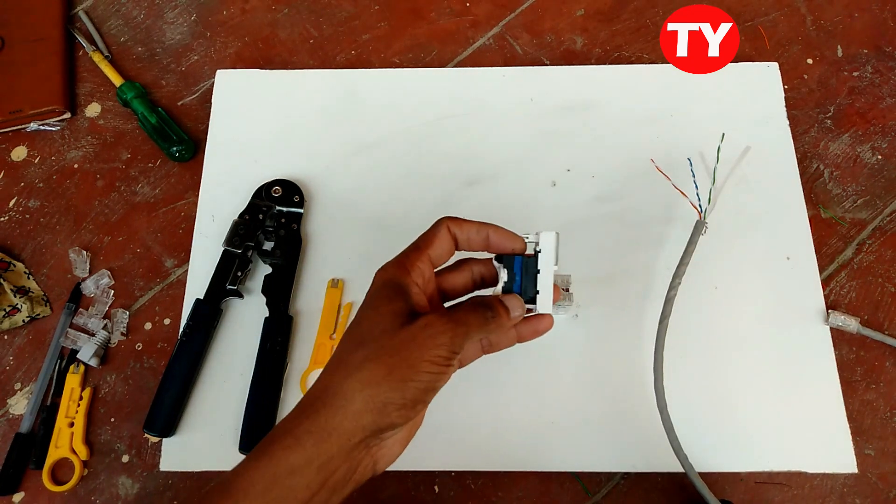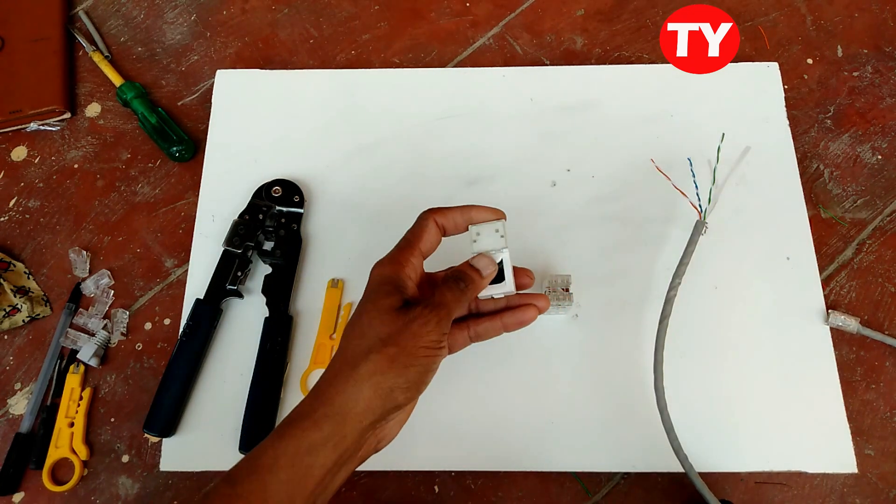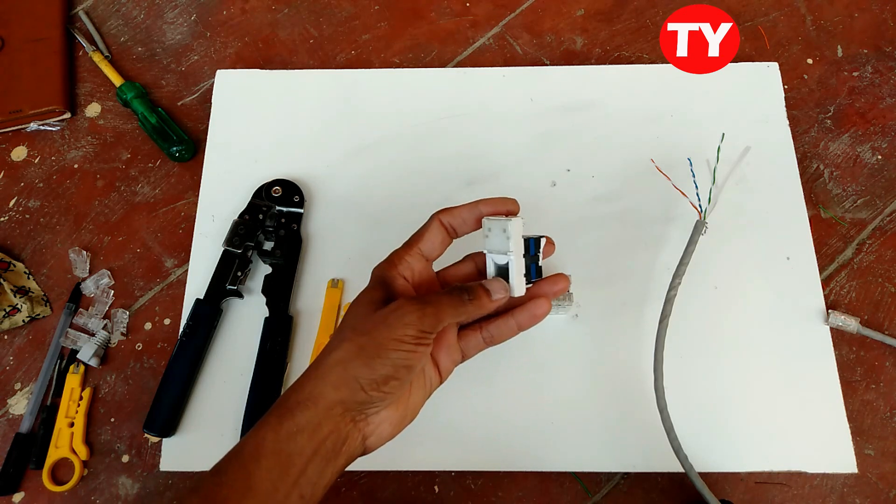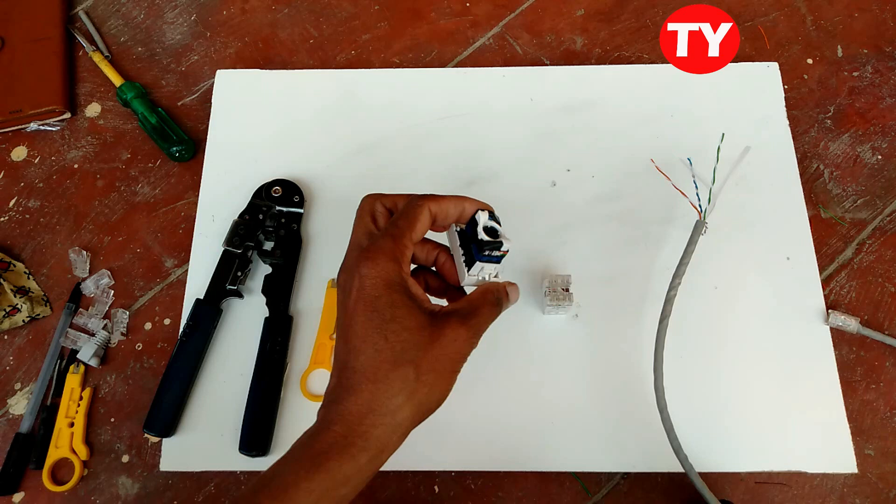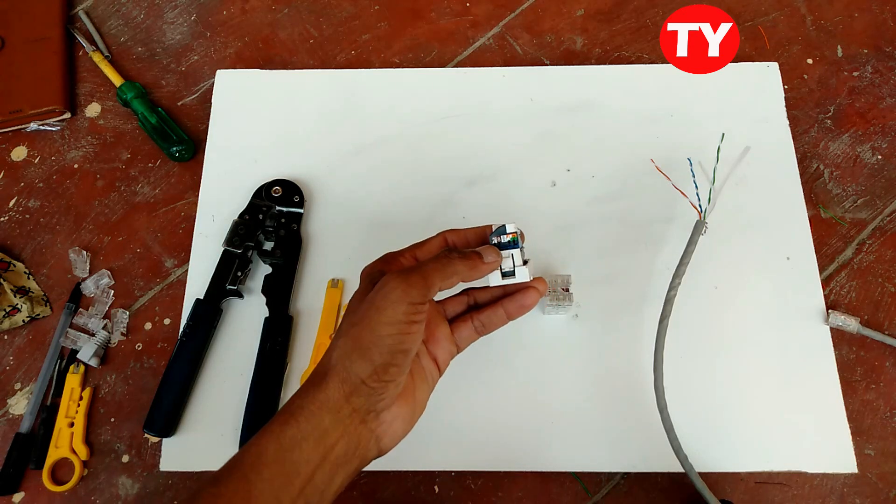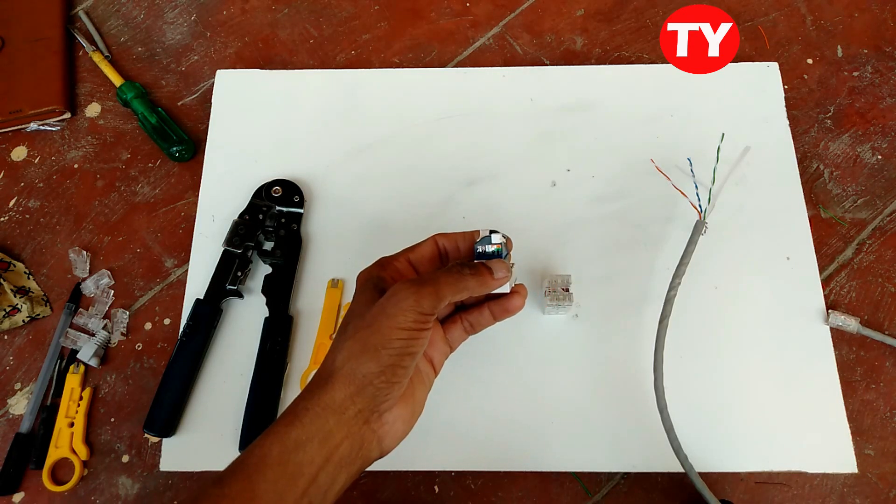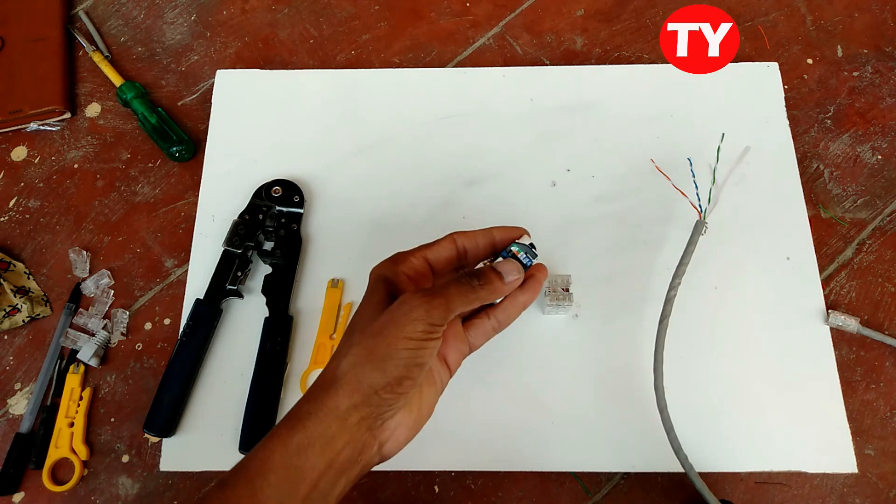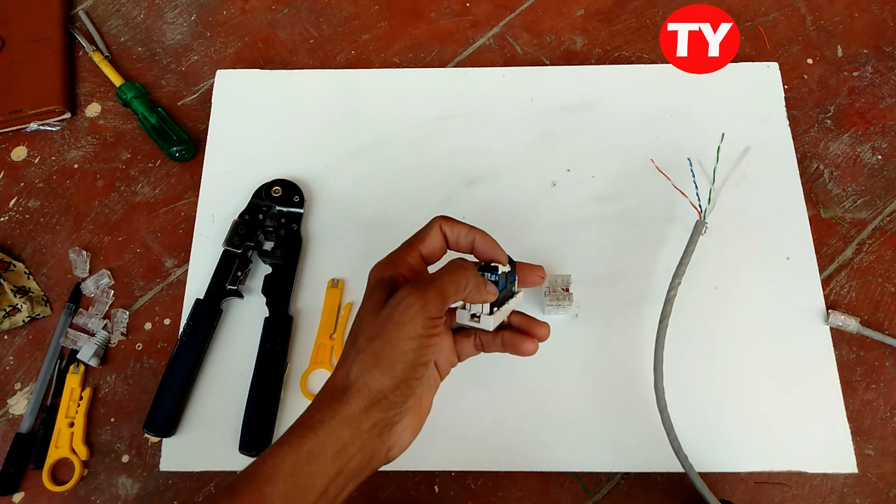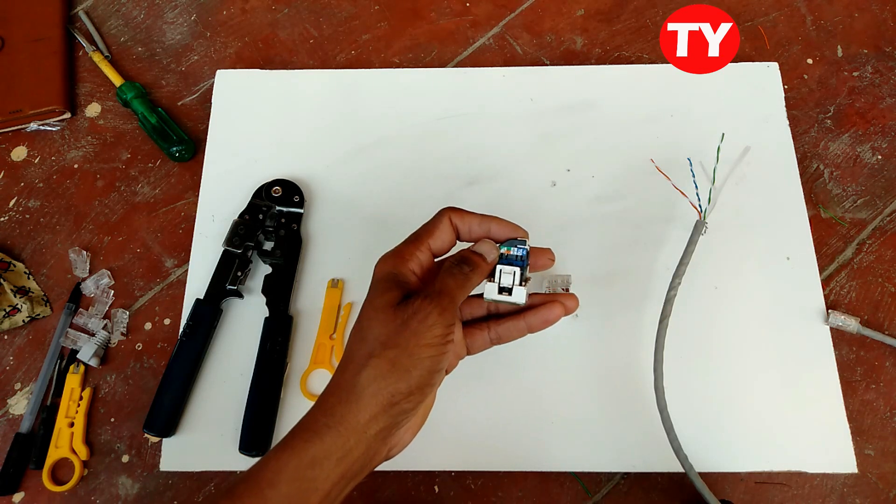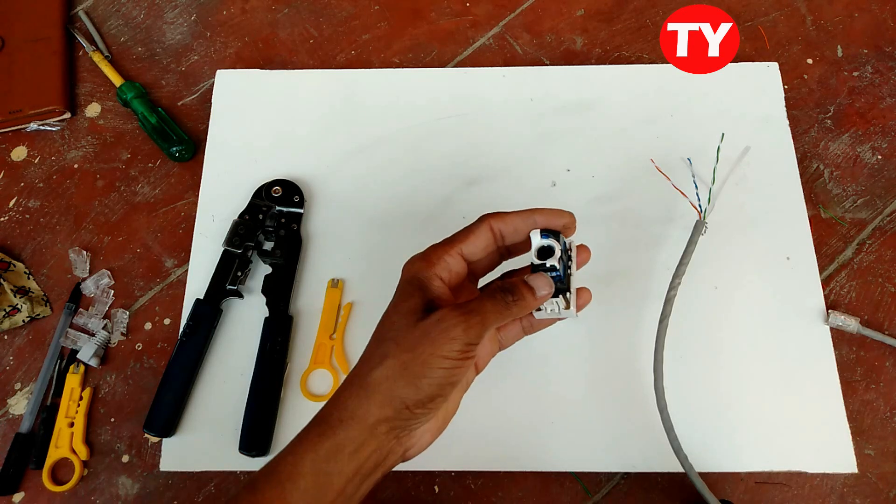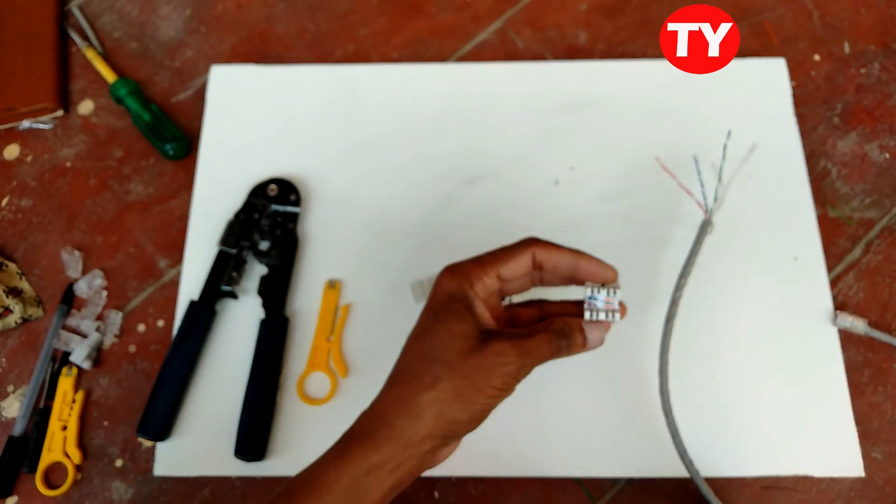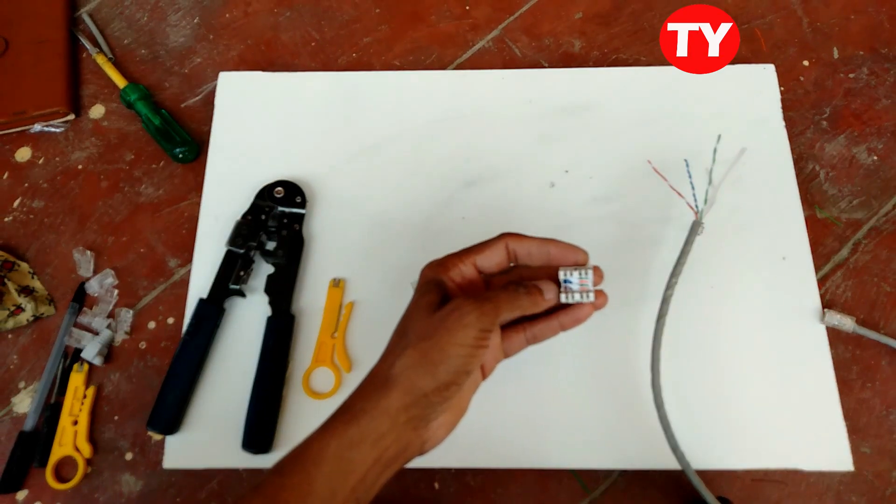Hello friends, in this video I am explaining about RJ45 connector, female connector, and how to connect this. Here is some indication: one and two, seven, eight, and three, six, five, four. Cable wire colors are also given, so we can easily make wiring in this.